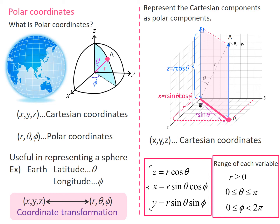Similarly, we obtain y by multiplying r sine theta by sine phi. In summary, we can write x, y, z using r, theta, phi in this way. Let's consider the range of each variable.